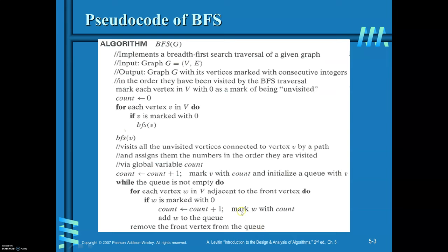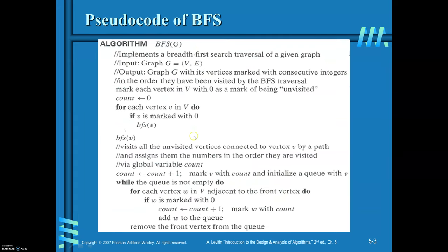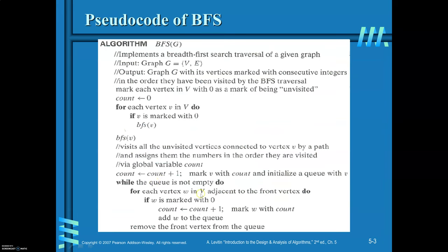So how long are you required to do this? Till Q becomes empty. I will explain this algorithm for the previous graph. So initialize all these vertices with value 0. Then what you are required to do is call this BFS algorithm with vertex 1. The next step is to increment the count by 1 and push vertex 1 into the queue data structure. Now 1 is marked with value 1 and is included into Q. Now, while Q is not empty — Q is currently containing one element, which is 1.